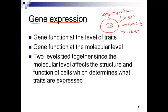Genes function at the level of traits — you are what you are based on the genes you carry. But even more importantly, genes function at the molecular level: they produce products that shape cells. The proteins you express at the molecular level ultimately determine the structure and function of those cells, which in turn determine the traits you carry. For example, if I don't express insulin in my pancreatic cells, that gene is not functioning properly, and that will ultimately make me diabetic — a trait. One molecular-level failure leads to an impact on the entire organism.